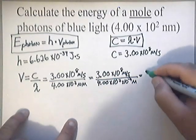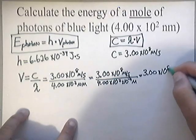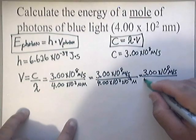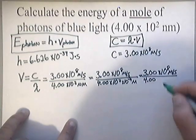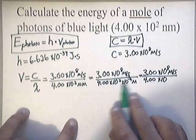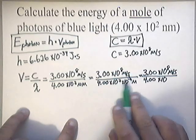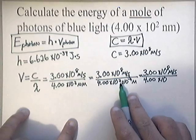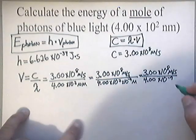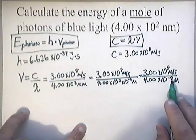Basically, we end up having 3.00 times 10 to the eighth meters per second over 4.00 times 10 to the second times 10 to the negative 9 meters. When I do that, that would give me the same number on top, 3.00 times 10 to the eighth meters per second. But on the bottom, this is going to be 4.00 times 10 to what? Remember in your math classes, you add exponents if the bases are the same. Since this is base 10, you add these two together. This would be 2 plus a negative 9, which is a negative 7. And the units is meters. So that's 4.00 times 10 to the negative 7 meters.